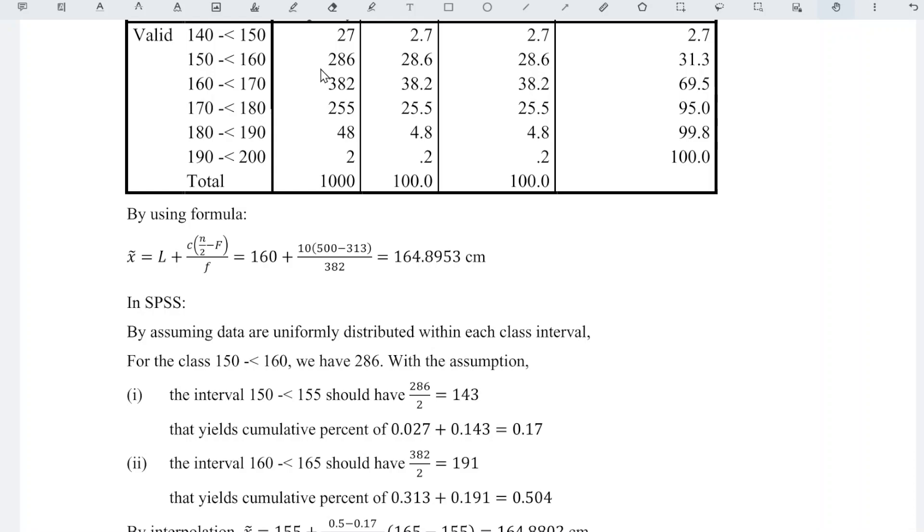Which means that SPSS makes use of midpoint and splits the class into two equal halves, and so for the frequency. Which means that the frequency should be shared evenly for these two split classes. In other words, for the interval 150 to less than 155 should have 286 divided by 2, which means that we have only 143 of them. And this uses cumulative percent of 0.027 plus this number divided by the total frequency 0.143, which means that we have 0.17 instead of 0.313.